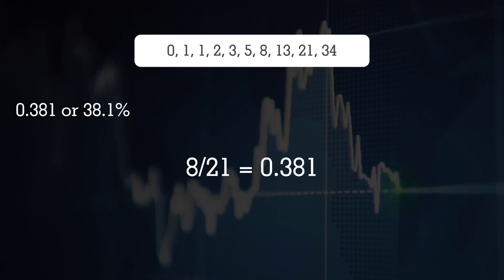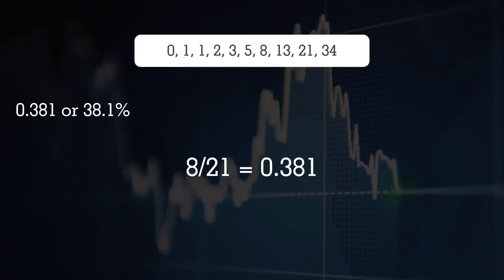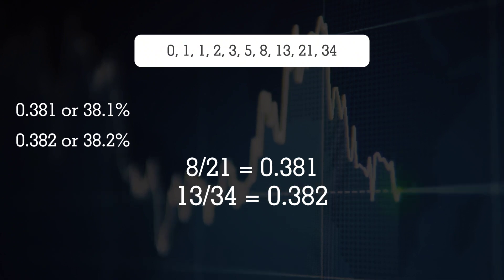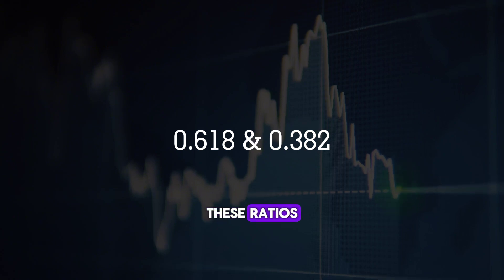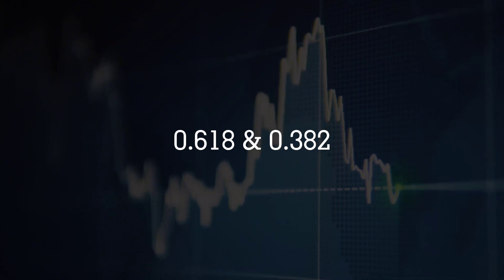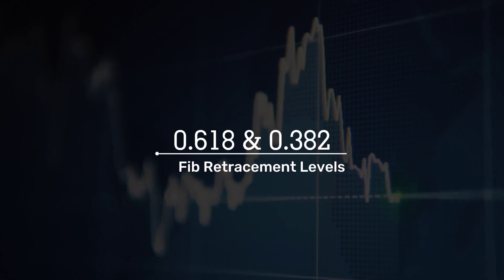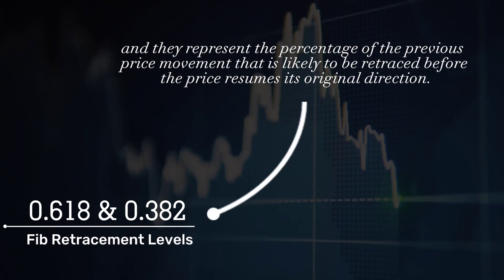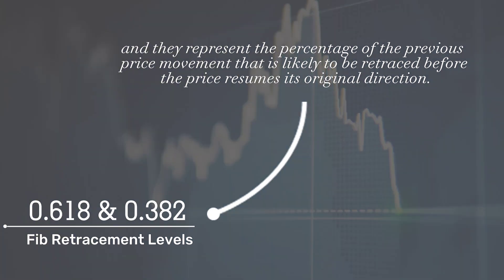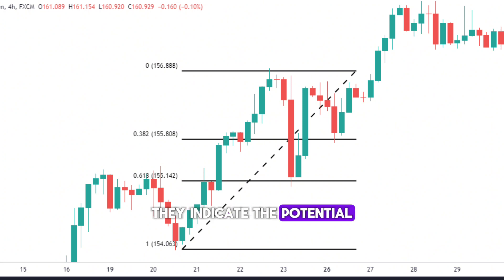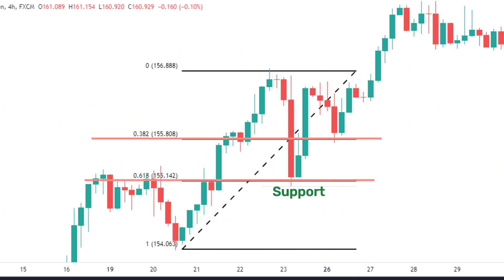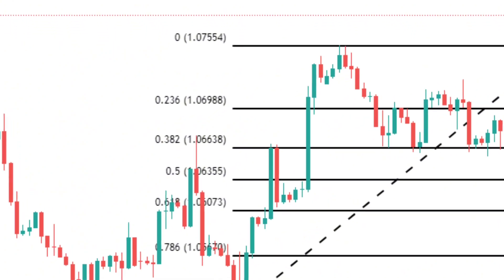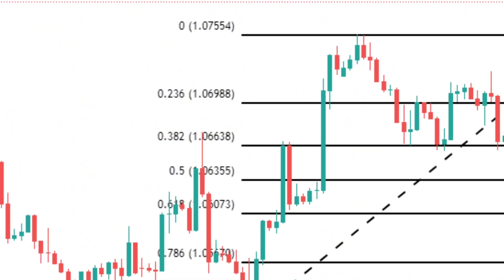And by dividing any number in a Fibonacci Sequence by the one that is two places higher, you get a ratio that is close to 0.382, which is another important Fibonacci ratio. For example, 8 divided by 21 is 0.381, and 13 divided by 34 is 0.382. These ratios — 0.618 and 0.382 — are also known as the Fibonacci retracement levels, and they represent the percentage of the previous price movement that is likely to be retraced before the price resumes its original direction. There are also other Fibonacci retracement levels commonly used by traders, such as 0.236, 0.5, and 0.786.